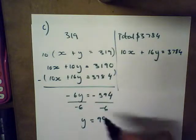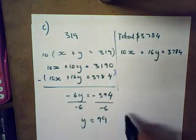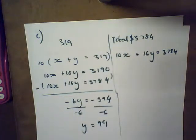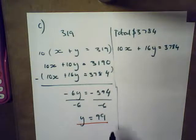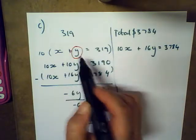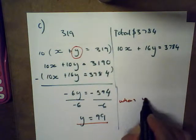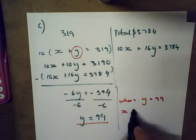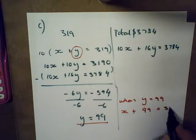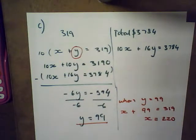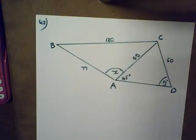Now I need to find x. I substitute y equals 99 back into the first original equation: x plus 99 equals 319, so x equals 220. That concludes question C. Let's go to number D.